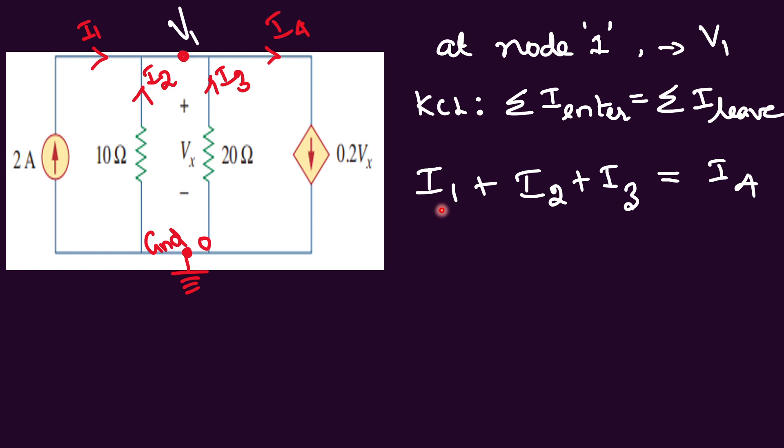We can write the equation here at this node entering currents are I1, I2, I3. We sum them all and then leaving current is I4 alone. And by noticing this, we can take this Vx is equal to V1. This V1 and Vx are the same.